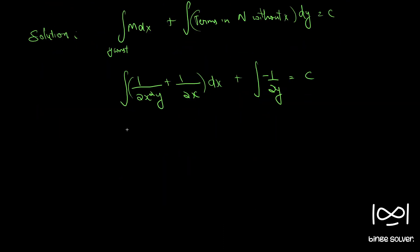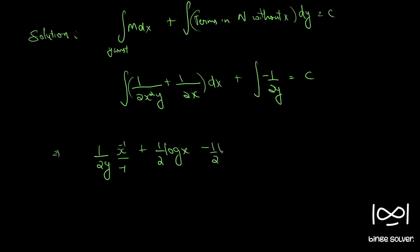When we integrate, treating y as constant: integrating 1/(2xy²) gives 1/(2y) · (x^(-1)/(-1)) = -1/(2xy). Integrating 1/(2x) gives (1/2)log x. Integrating -1/(2y) gives -(1/2)log y. So the result is -1/(2xy) + (1/2)log x - (1/2)log y = c.